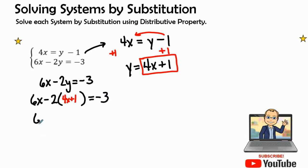As we're solving we're going to bring down that 6x. Negative 2 times 4x is a negative 8x. Negative 2 times a positive one is a negative 2 and that equals a negative 3.